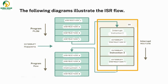Instruction 1, Instruction 2, Instruction 3, and Instruction 4 are the main program flow, started executing from the main function. When an interrupt happens, the main program jumps to the ISR. Once the routine is completed, it returns to the main program flow and starts executing Instruction 5, Instruction 6, Instruction 7, and Instruction 8. That is how ISR works in Embedded System Programming.